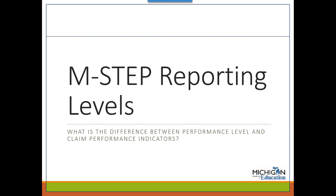Next, we will discuss the performance levels and claim performance indicators. The M-STEP reports provide information on what a student knows and is able to do in a content area as a whole, as well as for the claims within each content area in mathematics and ELA. Performance levels and claim performance indicators are what are used to report this information. Pause this video and take a moment to write on scratch paper: what are performance levels and what are claim performance indicators? Think about what they are, how they are the same, and how they are different.